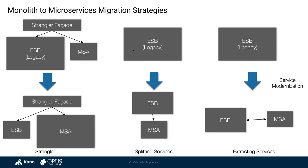The third strategy on the right is called Extracting Services. Here you have two completely separate infrastructures — the current ESB exposed as usual to consumers, and the brand new microservices-based infrastructure. Your ESB is consumed by traditional channels like CRM or call center applications, while the brand new digital channels — voice, mobility, and so on — consume your microservices instead.